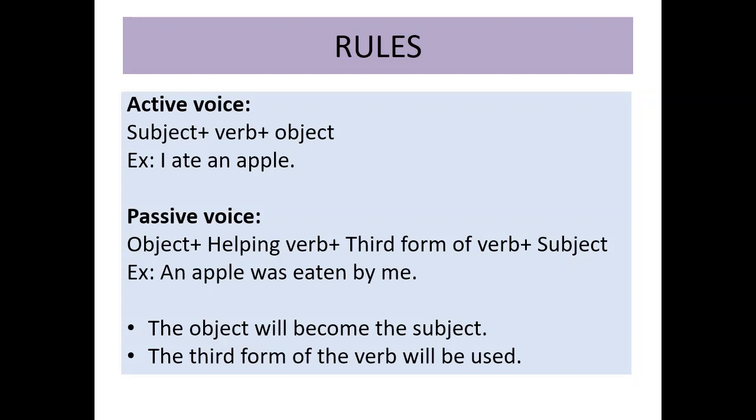If there is any sentence in active voice, we will read three parts: subject, verb, and object. When you change the sentence into passive voice, the subject of the active voice will become the object, and the object of the active voice will become the subject. It's a little confusing — let's see.